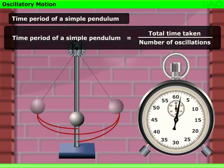So, we can say that the time period of a simple pendulum is equal to the total time taken divided by the number of oscillations.